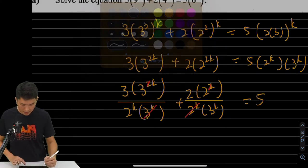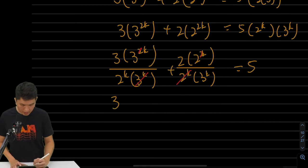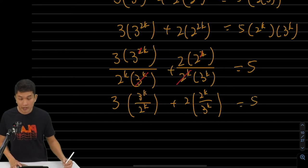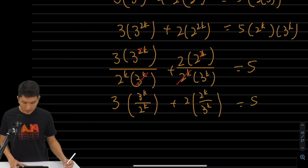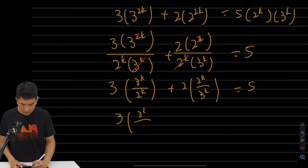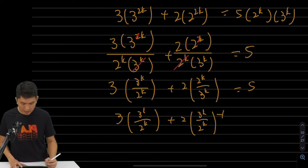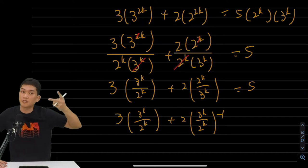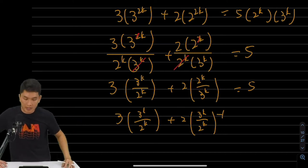Now, rewriting this, I can say that this is 3 times of 3 to the k over 2 to the k. And my next one is 2 times in a reverse order, 2 to the k over 3 to the k. Now, the next step, I'm going to do this. You don't have to do this, but I'm just going to make the working a bit more clearer. I'm going to write it as this. But I had to slap a negative 1, a negative sign to my powers. I can change positions on numerator and denominator as long as I attach a negative sign.